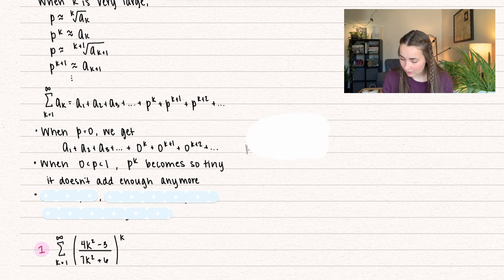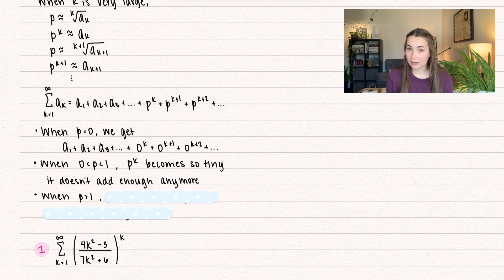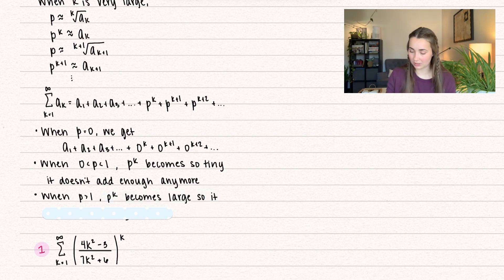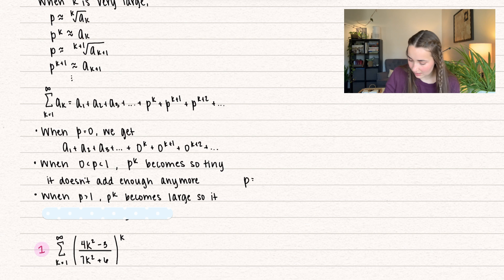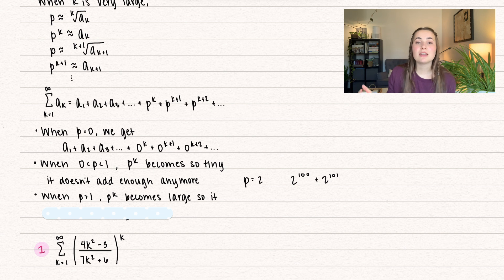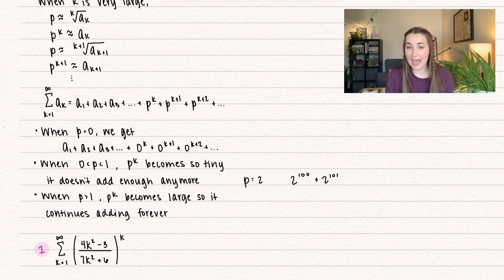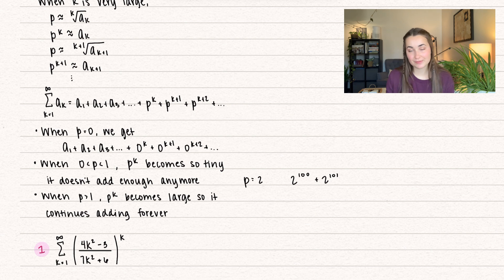And then we have our last option. When p is greater than 1, p to the power of k is going to get really, really big. Say p equals 2: then we have 2 to the power of 100 plus 2 to the power of 101, and so forth. Those get so big that it will forever be adding, and so that's why it diverges.